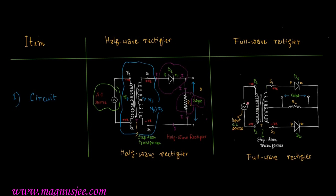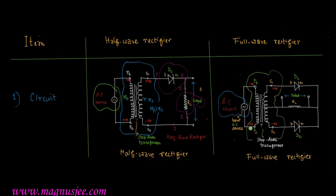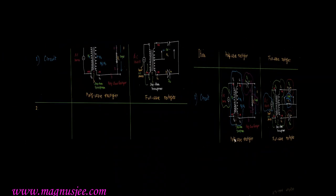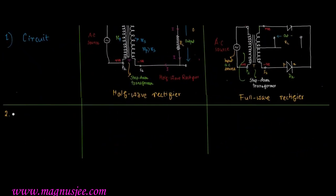For the full wave rectifier, the AC source is connected to a step-down transformer, and two semiconductor diodes D1 and D2 are connected in the circuit. The output is measured across the load resistance RL.